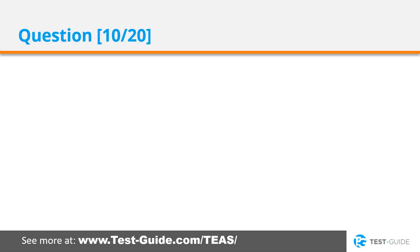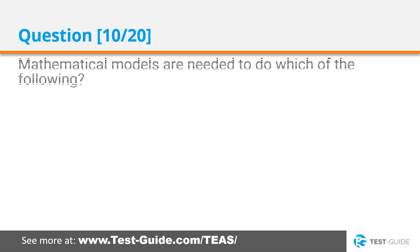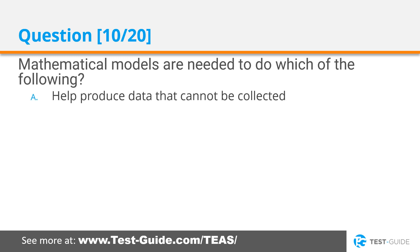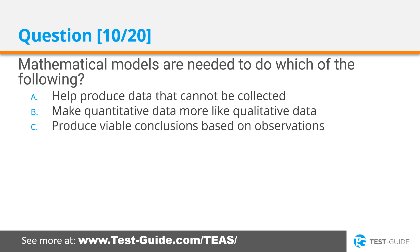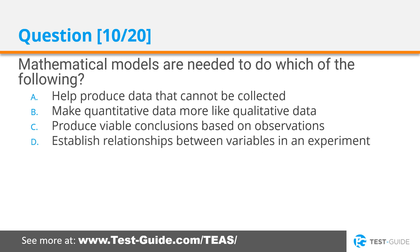Question 10. Mathematical models are needed to do which of the following? Help produce data that cannot be collected. Make quantitative data more like qualitative data. Produce viable conclusions based on observations. Establish relationships between variables in an experiment.